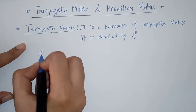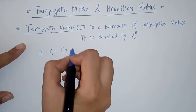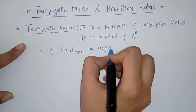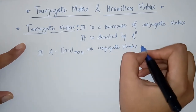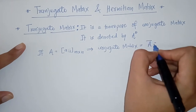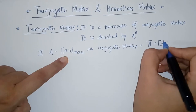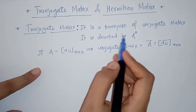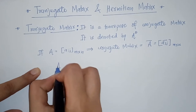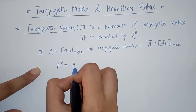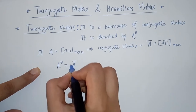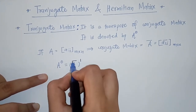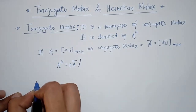Now we know that if we have matrix A of order M by N, then its conjugate matrix is given by A-bar, replacing all elements A-i-j by its conjugate. It is a matrix of the same order. The transjugate matrix, denoted A raised to theta, is obtained by first taking the conjugate and then taking the transpose. So the transjugate matrix is the transpose of the conjugate matrix.